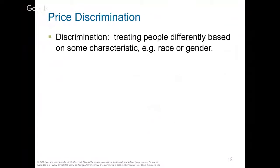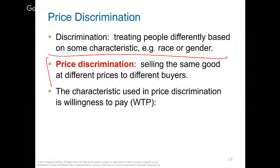Price discrimination is when companies sell the same good to different consumers for different prices. We have price discrimination all the time — even right now if you go to the mall, many stores have huge sales. They're selling the same good at different times for different prices — that's price discrimination. Price discrimination is legal as long as you don't discriminate based on gender, age, sex, or those other protected categories.